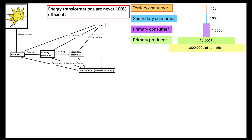Moving from primary to secondary consumer, the same process applies. When feeding, do consumers eat all of the material? If eating a producer, are they going to eat the bark or the lignified vessels? No. Parts of the plant are not utilised by the primary consumer. Similarly, when a secondary consumer feeds on the primary consumer, they won't eat the bones. So it's really important to note that energy transformation is never 100% efficient.